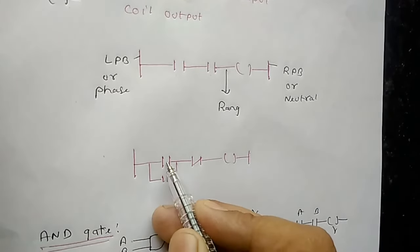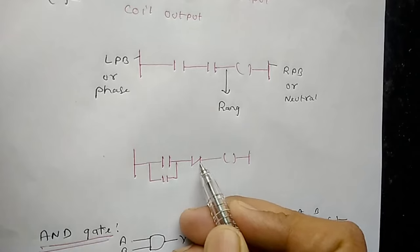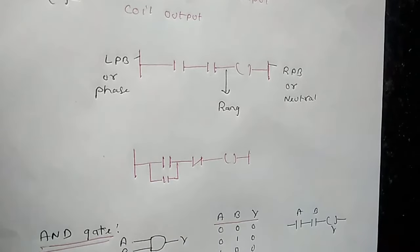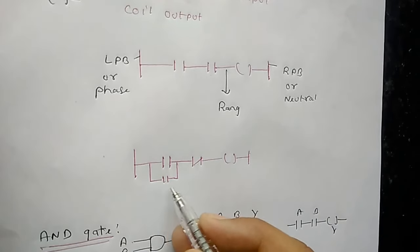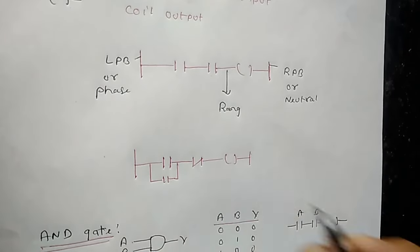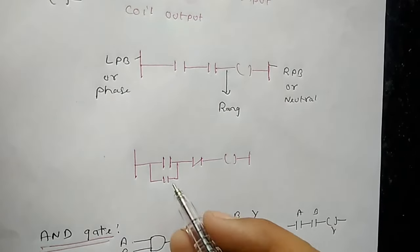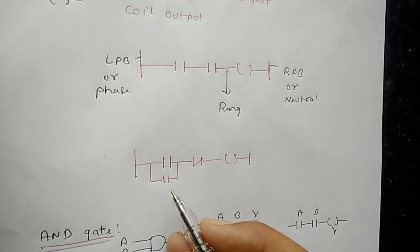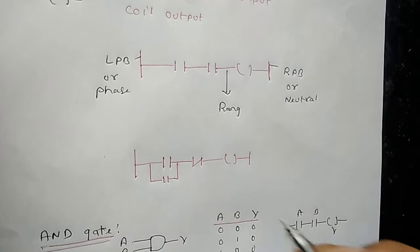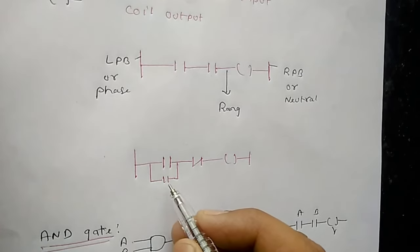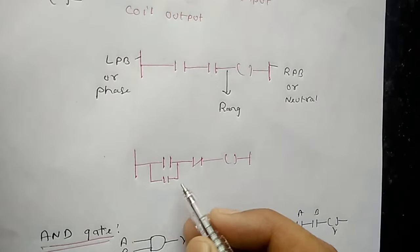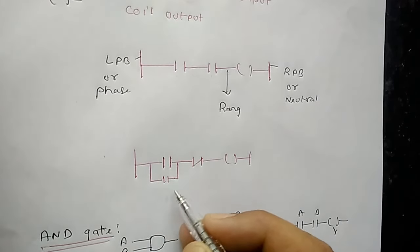You can see this is normally open, this is normally closed, this is the output, and this is called a holding contact. It is normally open, so it is called a NO holding contact.